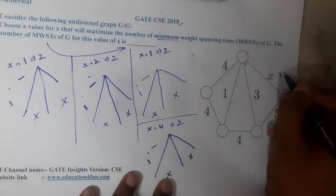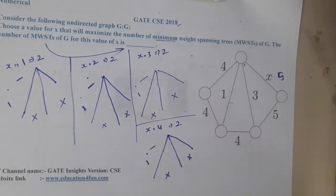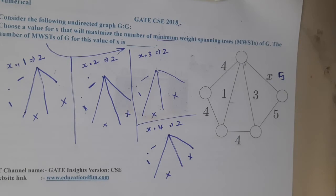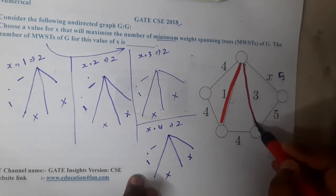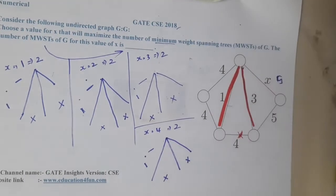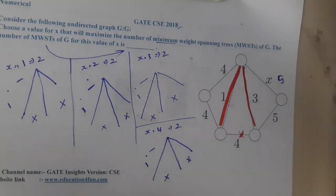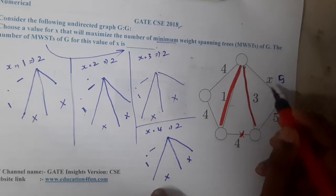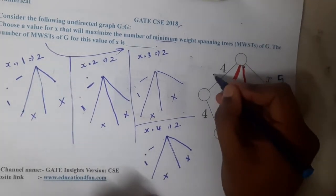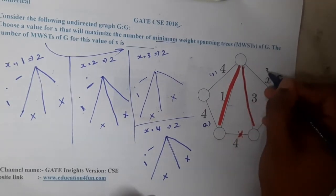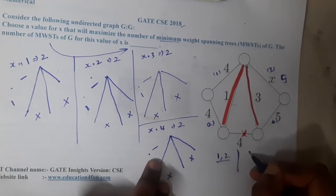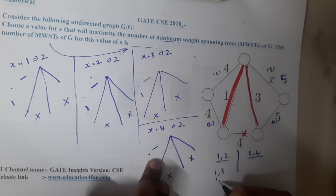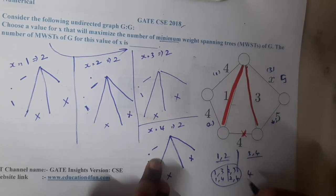So x=4 also gives 2. From initial cases we are getting 2, 2, 2, so now let us try x=5. First I will take this particular edge, then this particular edge. I cannot take this particular edge. Now, if I label the remaining edges 1, 2, 3, and 4 — among edges 1 and 2 I should select one, and among edges 3 and 4 I should select one. So: select 1 with 3, select 1 with 4, select 2 with 3, select 2 with 4 — that gives 4 different options total.